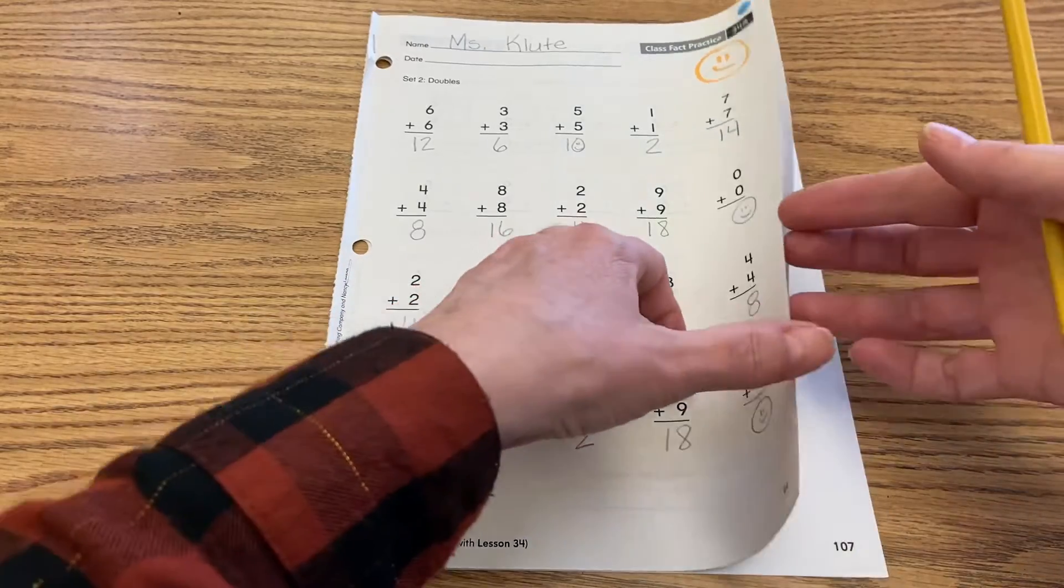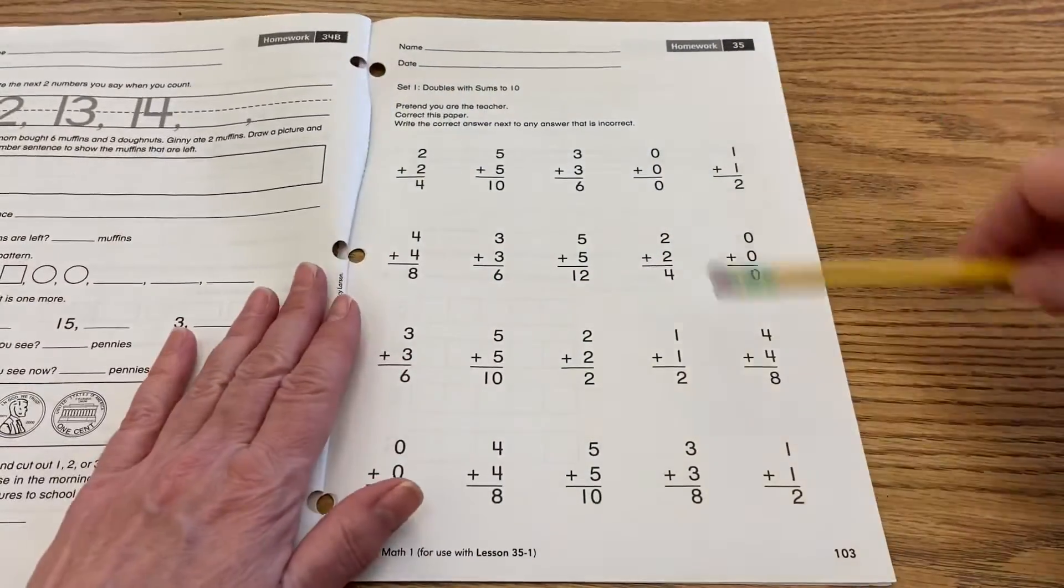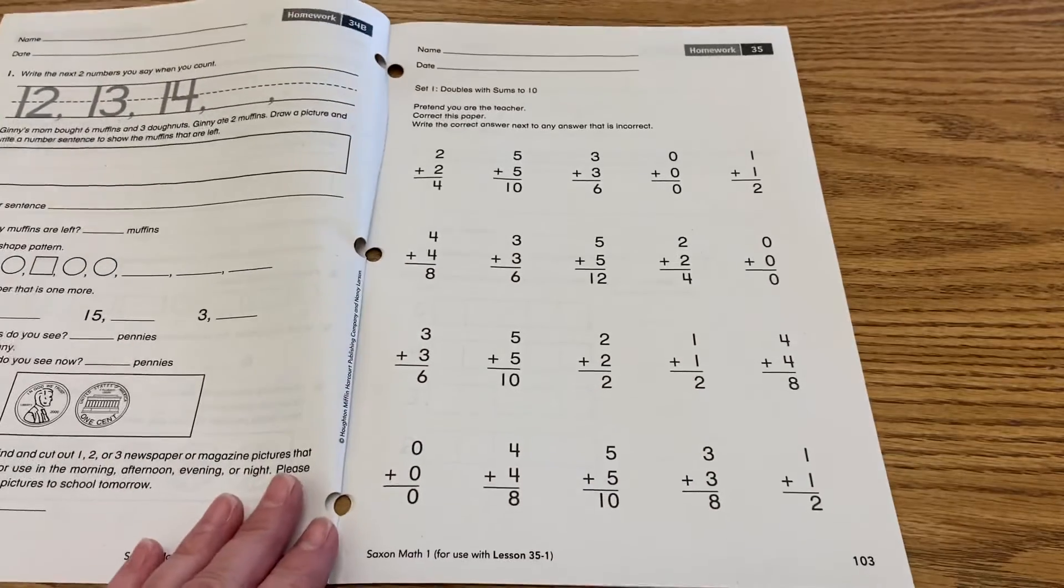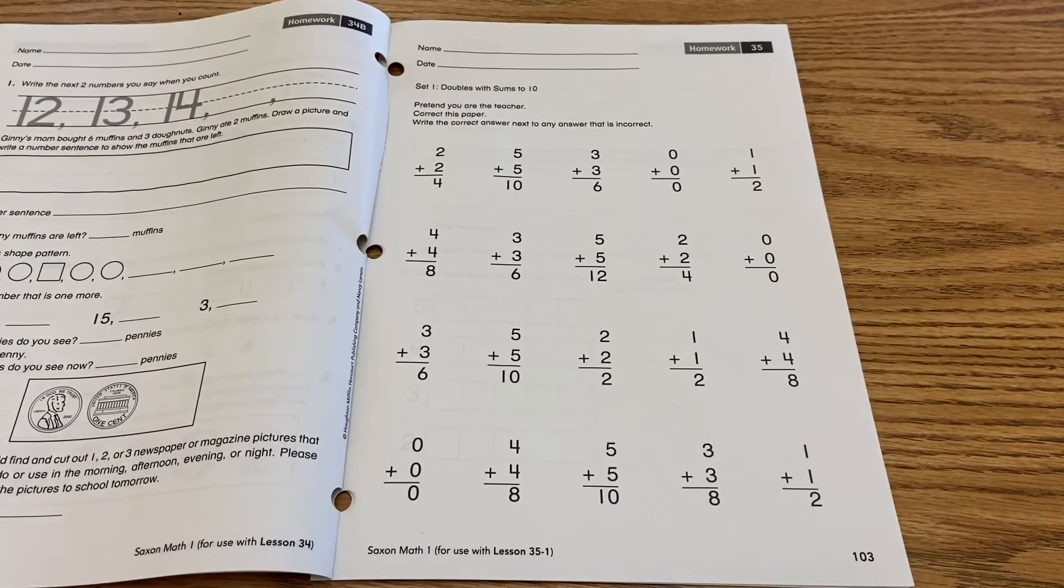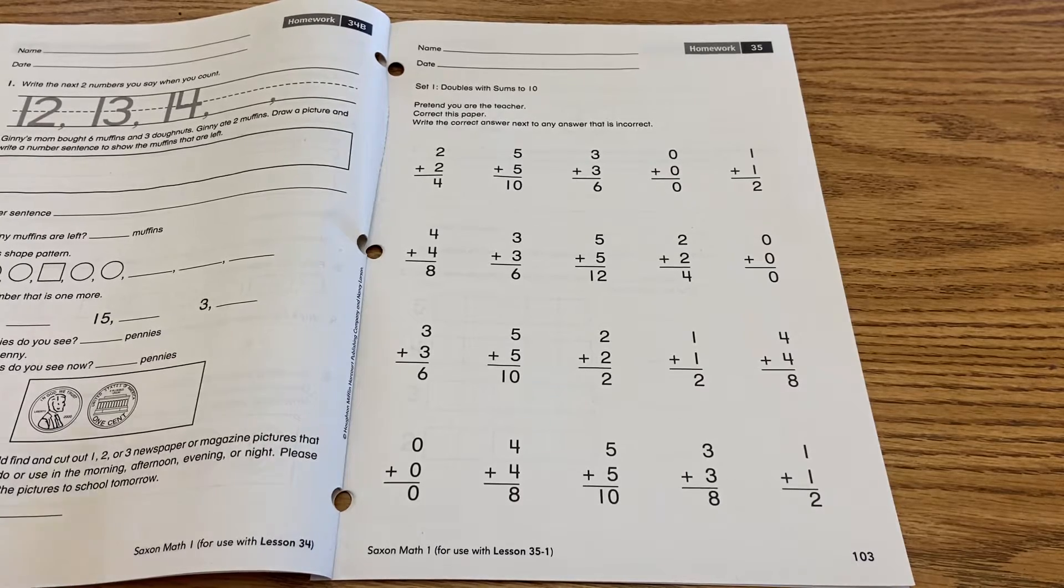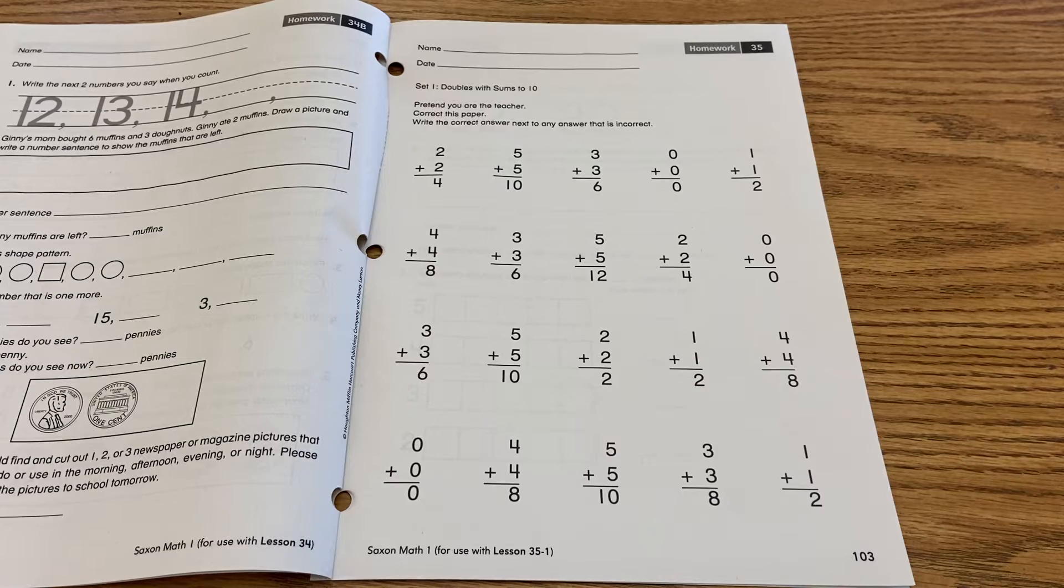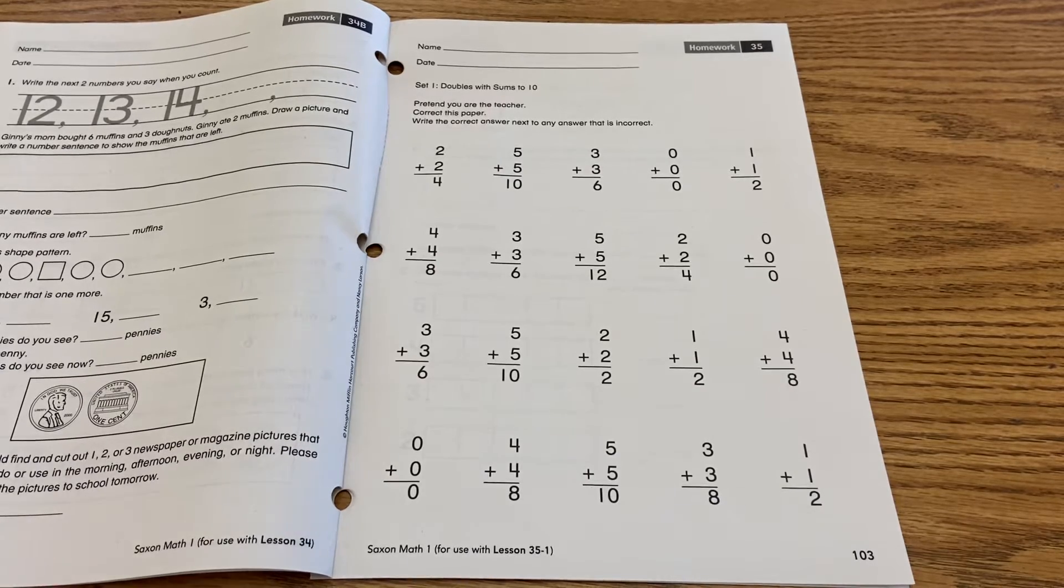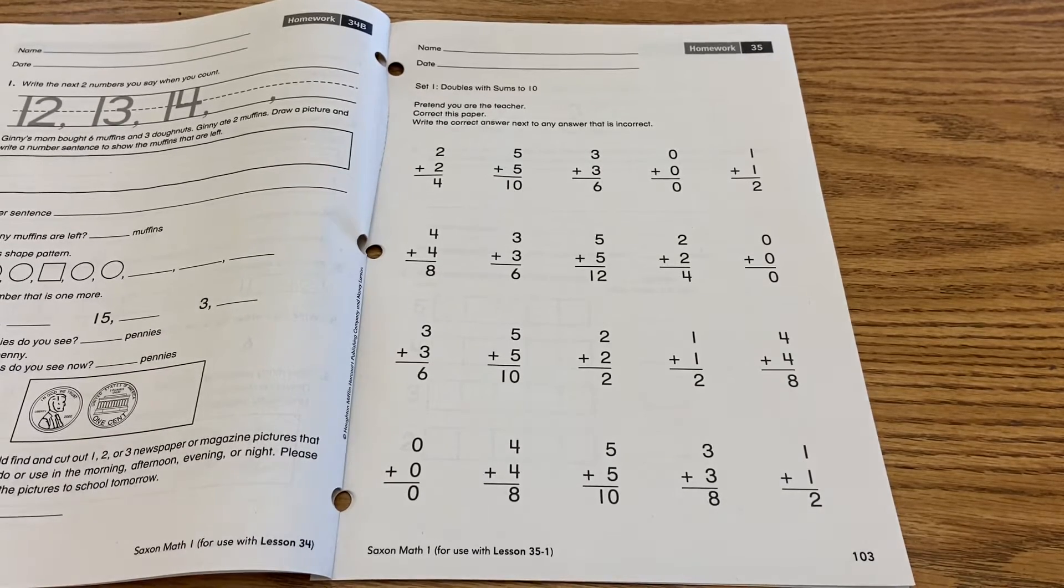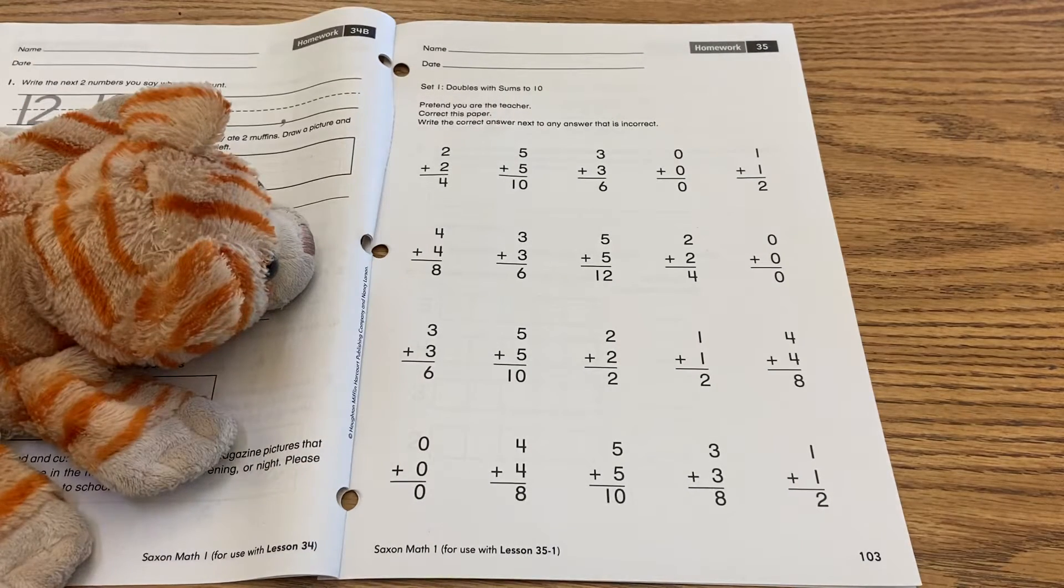So we're opening up to lesson 35 at the top and down here it says page 103 and what you get to do is you get to correct this paper. So pretend you have a student that turned this into you and you need to correct the answers. For instance my student here is CaliCat. Let's say CaliCat filled in this.